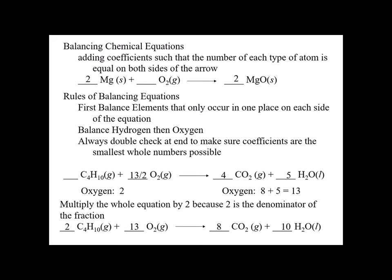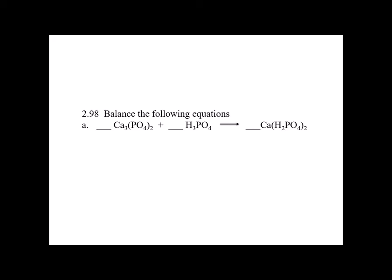Now let's do problems from the book. Number 28a: calcium phosphate plus phosphoric acid goes to form calcium dihydrogen phosphate. I start with elements only in one place — calcium. I have three calciums on the left and only one on the right, so I put a coefficient of three. Hydrogen is only in one place too; I have three H's in phosphoric acid, and after placing the coefficient of three, three times two times two gives 12, so 12 divided by three gives four — I put a four in front of calcium dihydrogen phosphate.